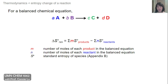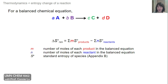The entropy change of a reaction equals the sum of the entropies of the products, each multiplied by m — the number of moles in the balanced equation — minus the sum of the entropies of the reactants, also multiplied by their respective molar coefficients. Standard molar entropies of various molecules are found in your textbook in Appendix B.